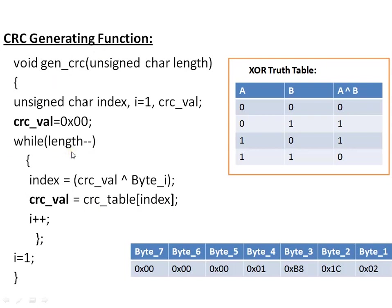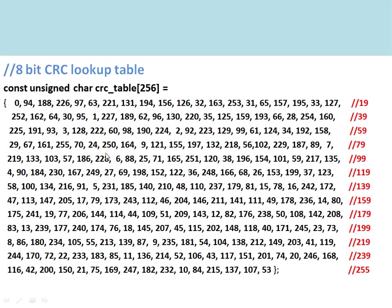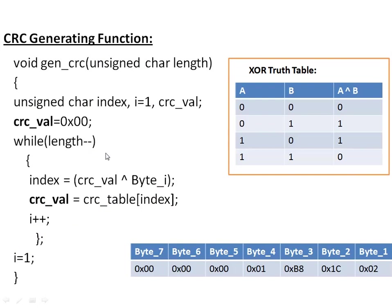This lookup table is used for calculating the CRC value. Here is the function for generating the CRC value. There are seven bytes being transmitted from sender to receiver — Byte 1 to Byte 7. Earlier we discussed only a single byte; for more bytes, software implementation is easier and faster. The length is 7, the initial CRC value is 0x00, and the index is calculated as: CRC value XOR byte, which becomes the index for looking up the next CRC value in the table.